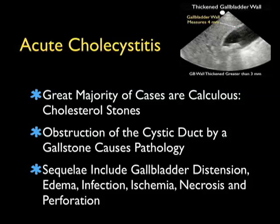Acute cholecystitis is usually caused by obstruction of the cystic duct by a gallstone resulting in pathology, and the list of sequelae include gallbladder distension, gallbladder edema, infection or acute cholecystitis, ischemia of the gallbladder wall resulting in necrosis and perforation of the actual gallbladder.